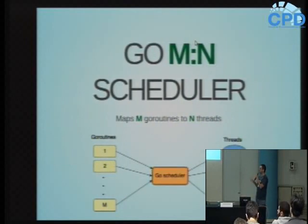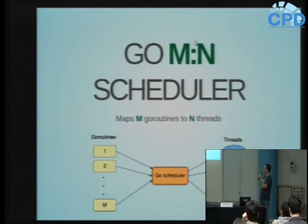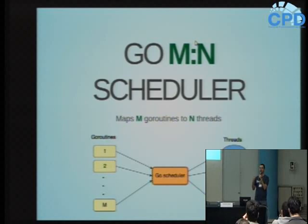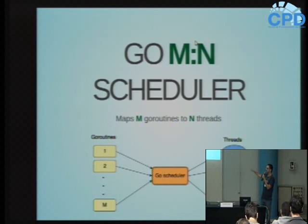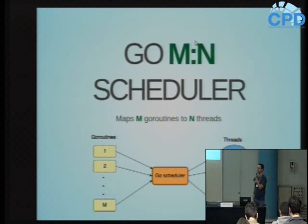O scheduler do Go é chamado de scheduler M para N porque ele mapeia M GoRoutines para N threads. Quando começo a executar o código, ele entra na função main e cria uma GoRoutine automática - a GoRoutine principal. Cada vez que eu chamo uma GoRoutine no meu código, eu crio uma GoRoutine nova. O número máximo de threads pode ser limitado, mas quem define quantas threads vão ser executadas e mapeia qual thread executa qual GoRoutine é o scheduler do Go. Isso tira essa responsabilidade do desenvolvedor.